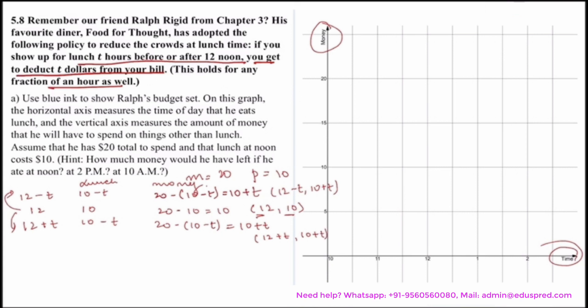So we have three scenarios with us. First point that your budget line would pass through is that at noon he has $10 left for other stuff. Now suppose what happens at 10 AM. If it is 10 AM, then this is the scenario where he is having lunch t hours before noon. So that would be, in this case, your t becomes 2, as at 10 AM he is having lunch 2 hours before noon.